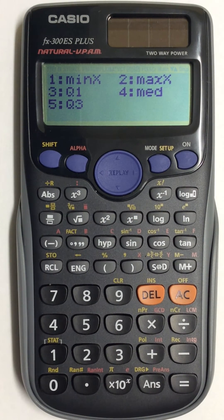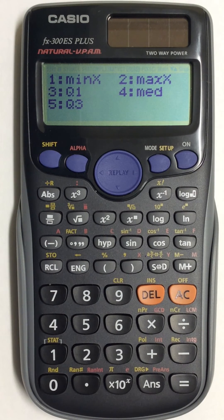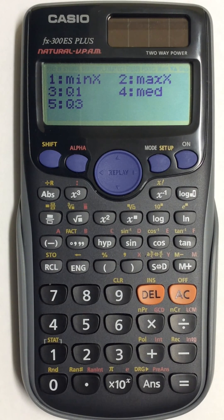This is how to find all of the values for your five-number summary in your scientific calculator.